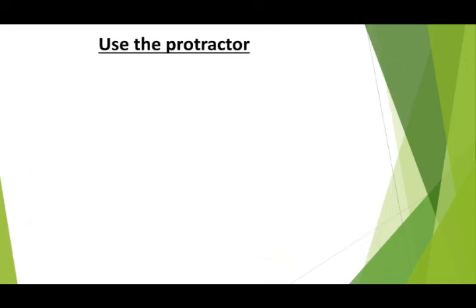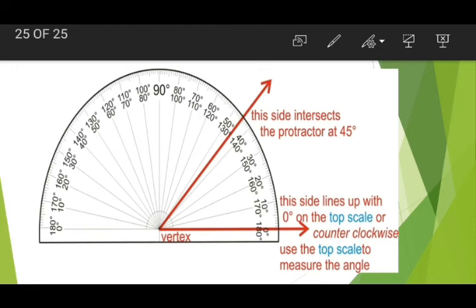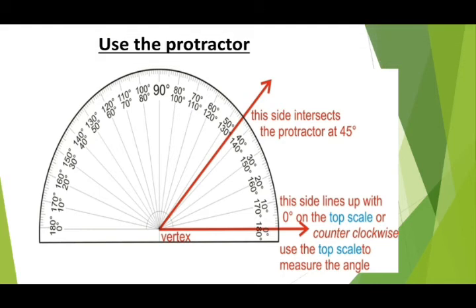Use the protractor. A protractor is semi-circular in shape. The semi-circular edge is divided into 180 equal parts. The degree can be marked in two ways: 0 to 180 from left to right on the outer edge, and 180 to 0 on the inner edge. To measure any angle, we use a protractor.